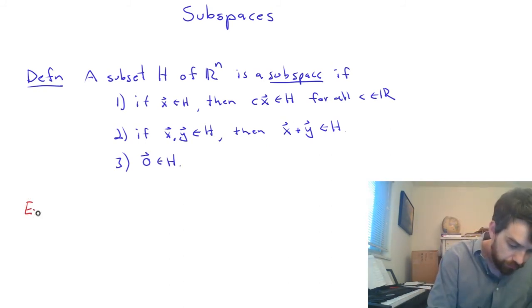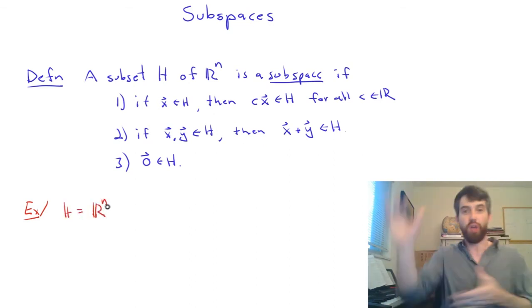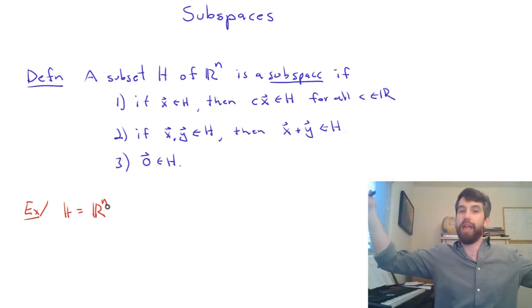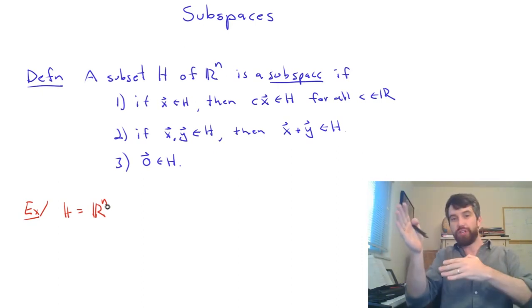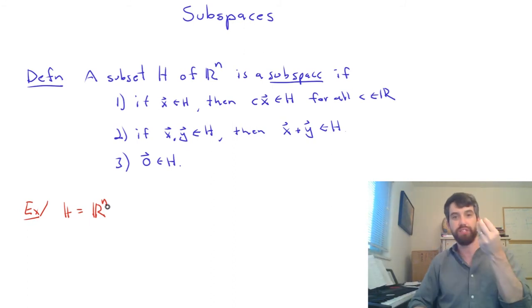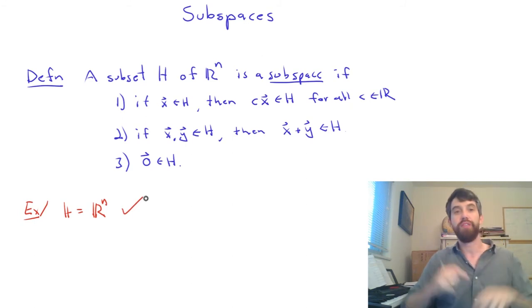Well first example. What if my H was going to be, well, how about just absolutely everything? It's all of Rn. Well, this should automatically work because we know that if we take a vector and we stretch it, that's still in everything. If we add two vectors in Rn, that still remains a vector in Rn. Clearly the zero vector is inside of Rn, so it obeys all three properties. The entire space is sort of in a vacuous sense, a subspace.